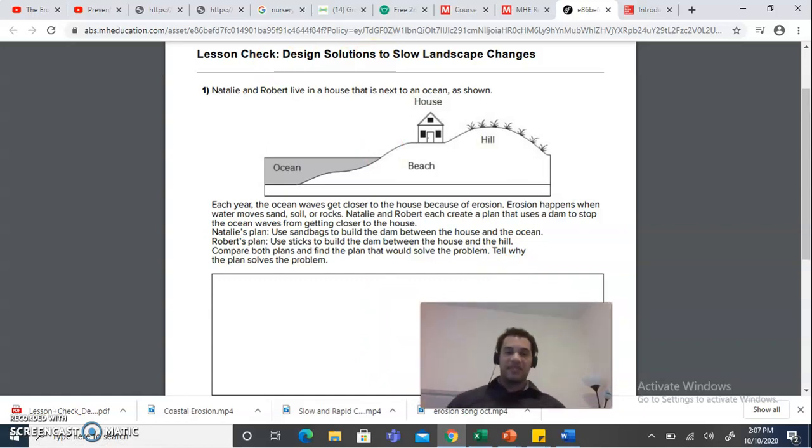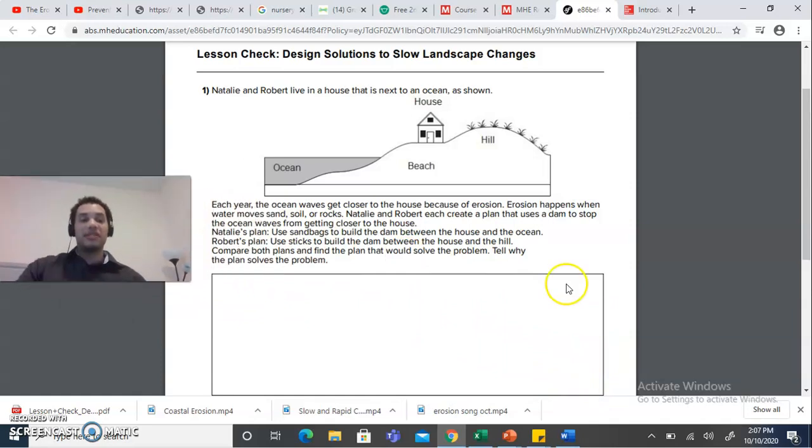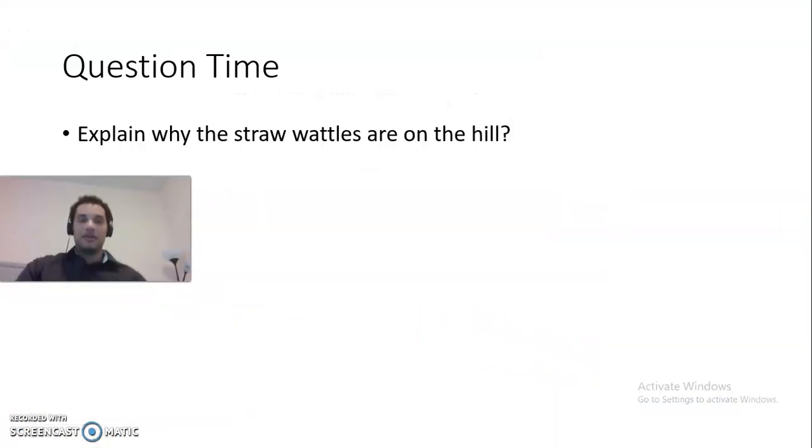Okay, so let's keep it going. All right. So it says each year the ocean waves, here's the ocean, get closer to the house because of erosion. Erosion happens when water moves sand, soil, or rocks. Natalie and Robert each create a plan that uses a dam to stop the ocean waves from getting closer to the house. Natalie's plan, use sandbags to build the dam between the house and the ocean. Robert's plan, use sticks to build the dam between the house and the hill. Compare both plans and find the plan that will solve the problem. Tell why the plan solves the problem. So you need to tell me whose plan is better, Natalie's plan or Robert's plan. And you need to tell me why. So this will be one of your lessons on Seesaw.